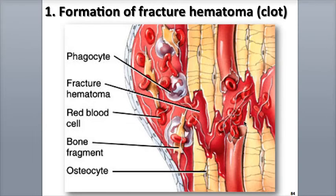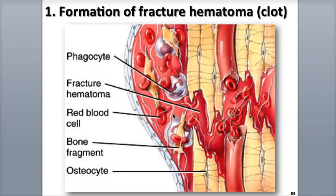As bone cells die in the area of the fracture due to being cut off from blood circulation, lots of swelling and inflammation takes place in the area. The debris that accumulates, along with dead and damaged cellular tissue, is removed by phagocytic white blood cells and osteoclasts. This phase can extend over several weeks' time.